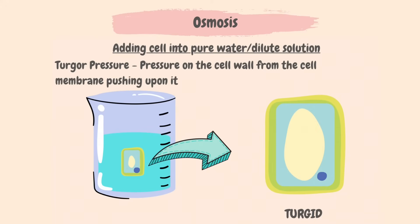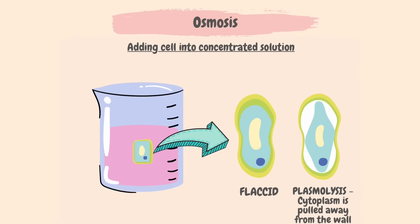Let's look at what will happen if we add the cell into concentrated solution. There will be a higher water potential inside the cell than outside, and therefore water will move out of the cell. As the water moves out, cells become flaccid or shrink. A plant cell can become plasmolysed if too much water is lost — this is when the cytoplasm shrinks due to the loss of water, but the cell wall fails to shrink due to its tough structure, and the cytoplasm eventually tears away from the cell wall.